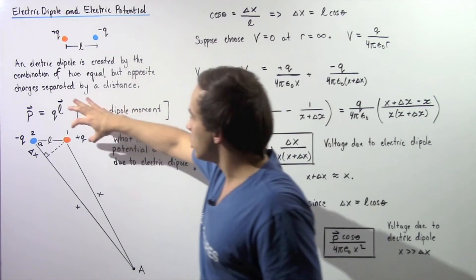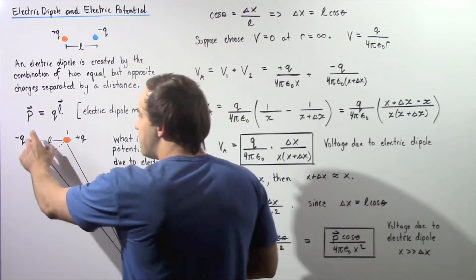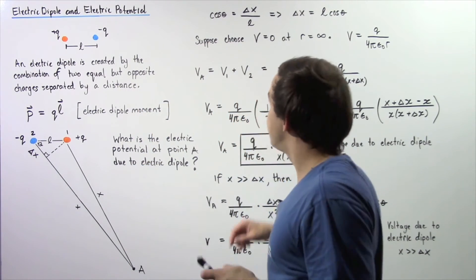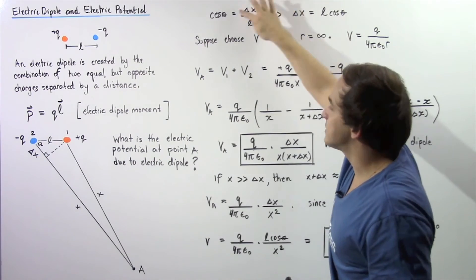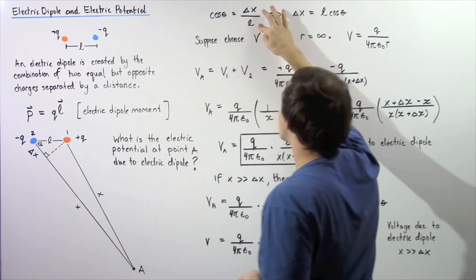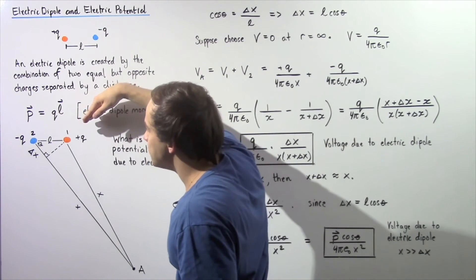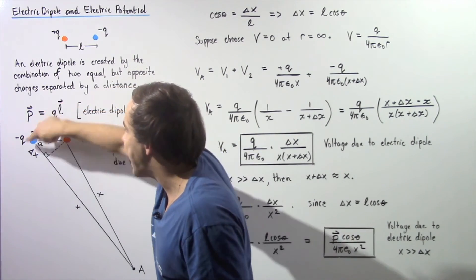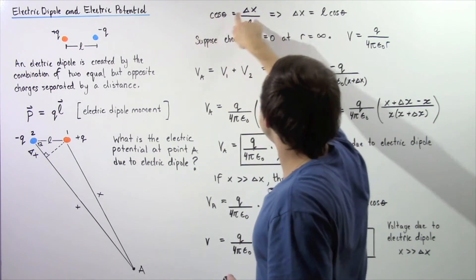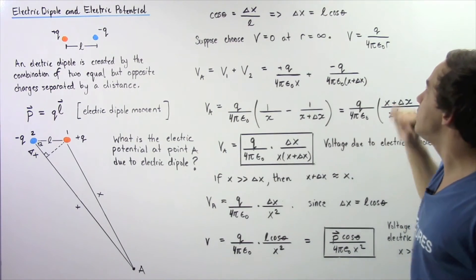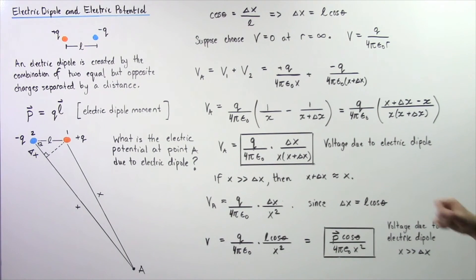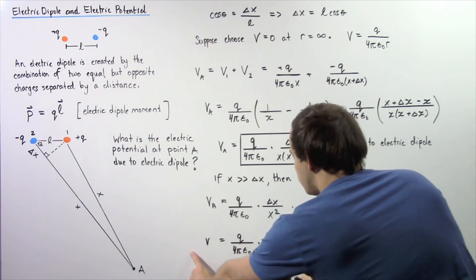Looking at the right triangle we constructed, the base is Δx, the hypotenuse is L, and the angle is θ. By the cosine trig function, cos(θ) = Δx / L, so Δx = L · cos(θ). We substitute this into our expression, replacing Δx with L · cos(θ).